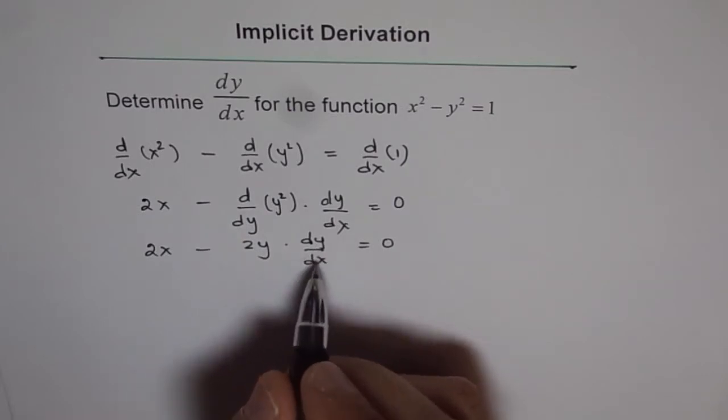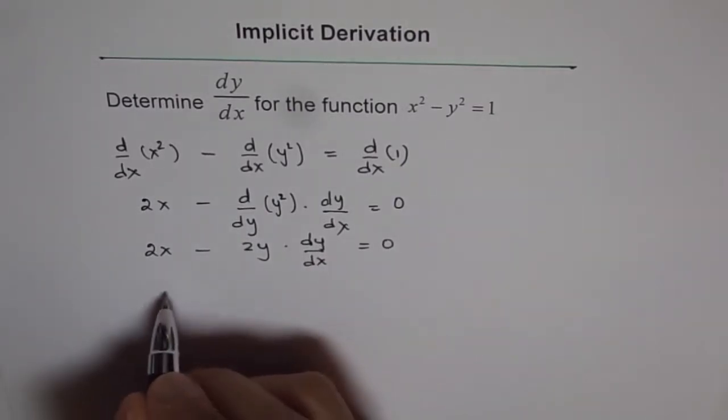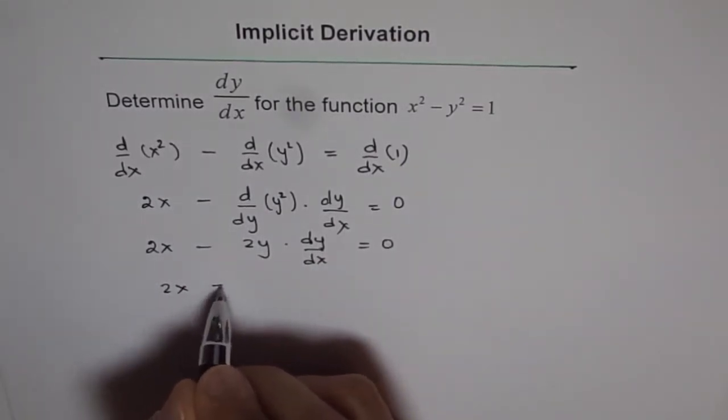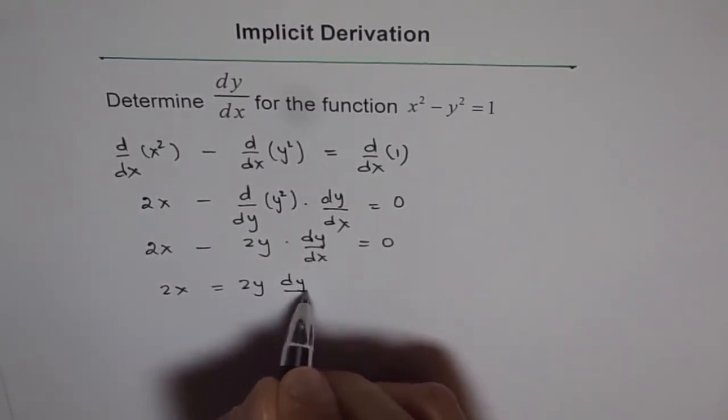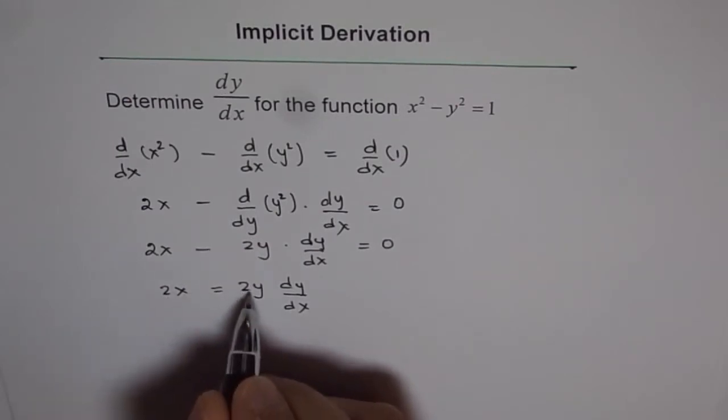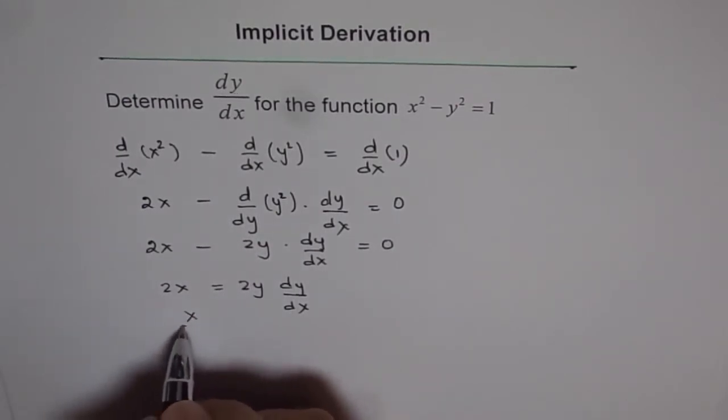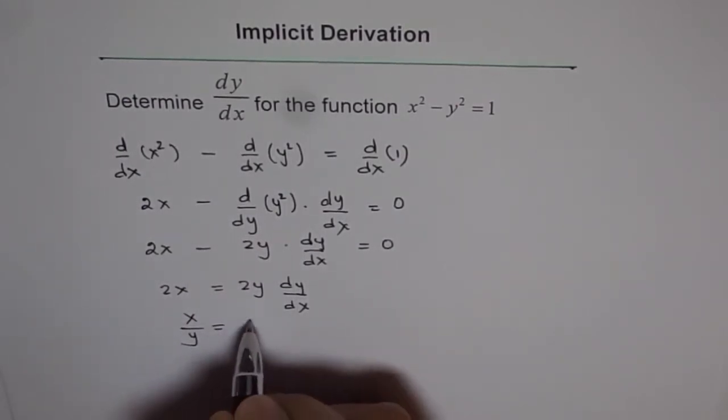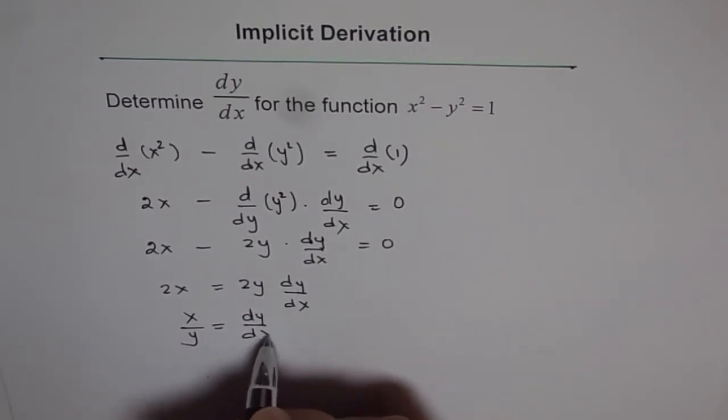Now at this stage, we can isolate dy/dx. So we have 2x equals 2y dy/dx. And then we have 2x divided by 2y will give us x/y equals dy/dx.